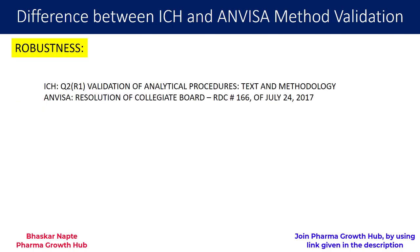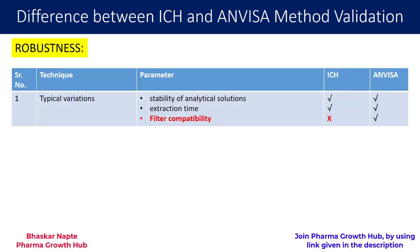The third parameter where differences exist between ICH and ANVISA is robustness. Robustness involves making deliberate variation changes to method parameters to understand the impact on the method's performance and system suitability. For typical variations, both ICH and ANVISA address stability of analytical solutions and extraction time. However, filter compatibility is mentioned by ANVISA but not by ICH — that is why it is highlighted in red.